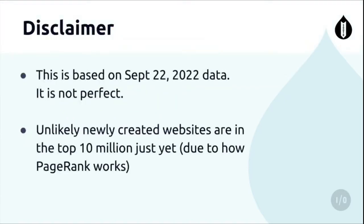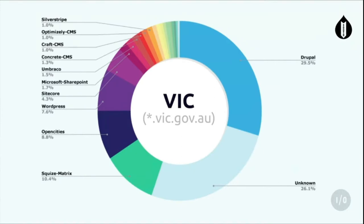Caveats: this is based on September 2022 data. It is a snapshot, it's not perfect. It doesn't have all your new shiny sites you've just launched. It takes a while for PageRank to start working because it's based on incoming links to your site. So if you've got a brand new website, Greenfield, it's probably not going to be here. I decided to do it by state to begin with, leading up to the bigger graph.